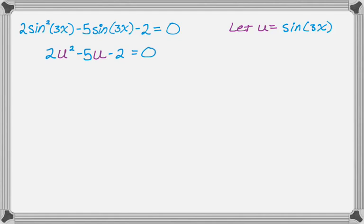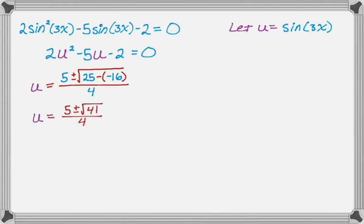I look at that and I can't factor it, so now I'm going to use the quadratic formula. So u equals the opposite of b, which is 5, plus or minus square root of b squared, which is 25, minus 4 times a times c. So 4 times 2 times negative 2 is negative 16, and that's all over 2 times a, which is 4. So this gives me u equals 5 plus or minus radical 41 all over 4.